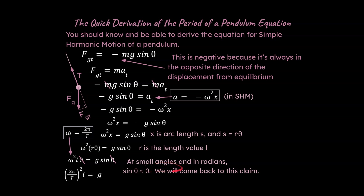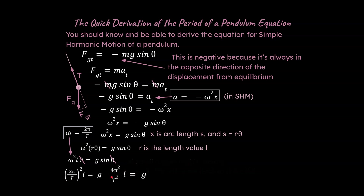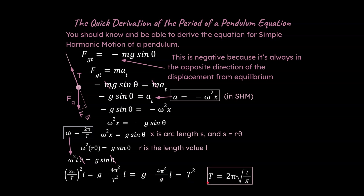Now I'm running out of room, so I'll get rid of the small angle approximation notation. We continue to take what we have and algebraically rearrange it into the period of a pendulum equation — solving for period. We distribute the squared function and isolate for T, and we end up with the period of a pendulum equation. It now makes sense to say this holds true only at small angles — if angles become too large, this equation no longer holds.